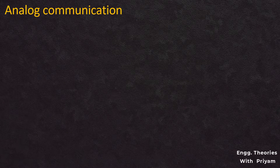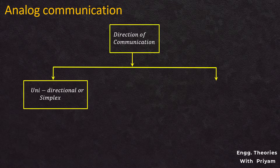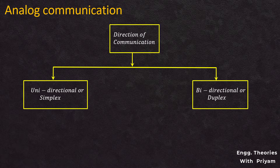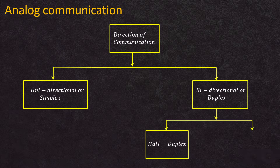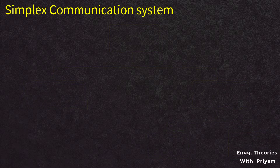In the lecture on the block diagram of the communication system, we saw what an electronic communication system is and the different types. Based on the direction of communication, it is of two types: unidirectional or simplex, and bi-directional or duplex. Duplex communication systems are further divided into half duplex and full duplex.